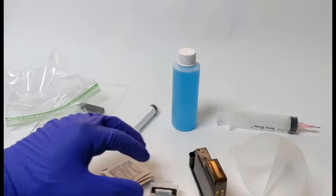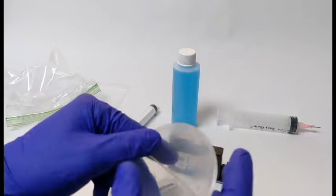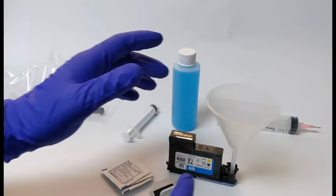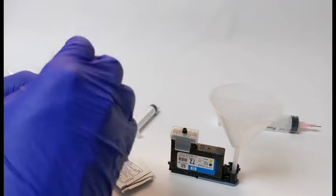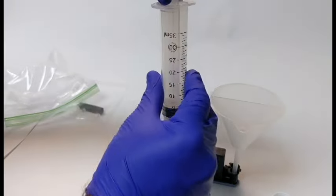To start, place the print head upside down on a flat surface. Insert the funnel over the print head needles. Using the larger syringe, extract about five milliliters of cleaning fluid and inject it into the funnel.